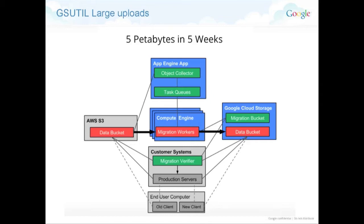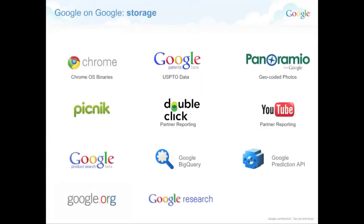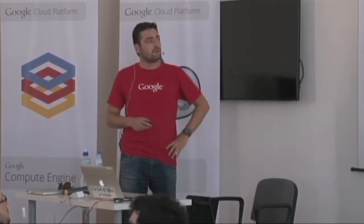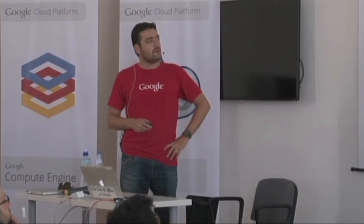As I said, we use it internally. All Google products are products we chose to build because we couldn't find the right technology on the market — true for Gmail and all Google products. All these Google products use Google Cloud Storage today. BigQuery and Prediction are two other Cloud Platform products where you upload to Cloud Storage first. From BigQuery, one command loads data before you run your SQL request. Prediction uses Cloud Storage the same way.